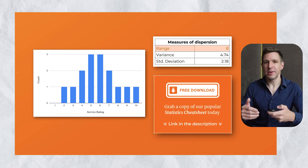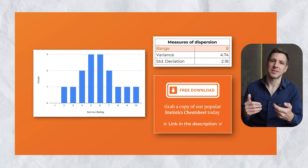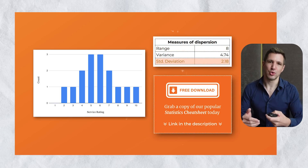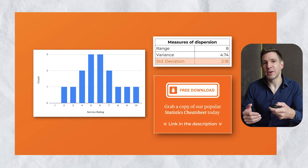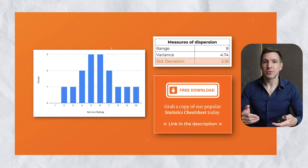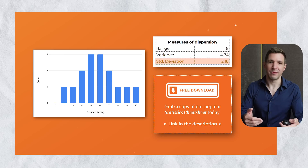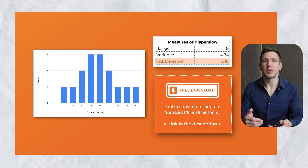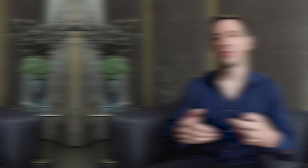We'll skip past the variance and look at standard deviation, as these are telling us the same thing. Here we can see a standard deviation of 2.18, which tells us that on average, results within the dataset were 2.18 away from the mean of 5.8. This reflects a relatively dispersed set of data, which confirms what we can see in the bar chart.